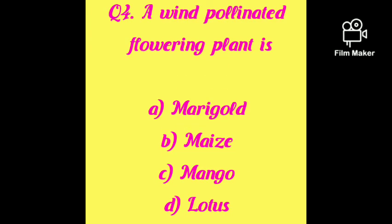A wind-pollinated flowering plant is: marigold, maize, mango, or lotus? The answer is maize, option B. Generally, wind-pollinated flowering plants have very light, dull-colored pollen grains.